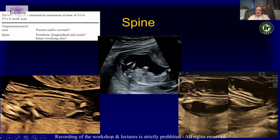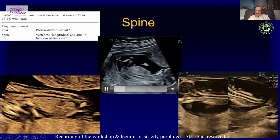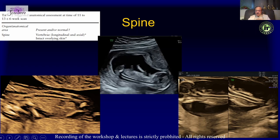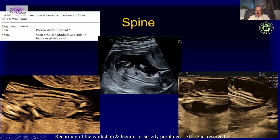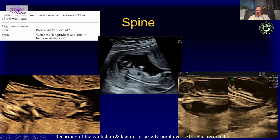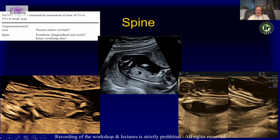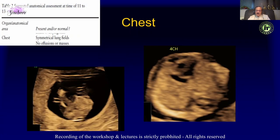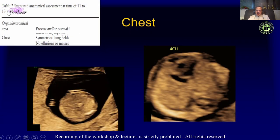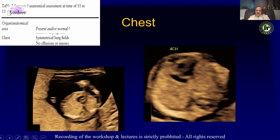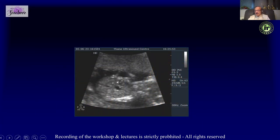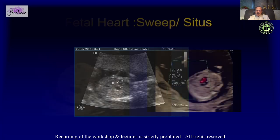Then look at the spine itself in all three planes — sagittal, coronal, and transverse — and make sure the overlying skin is intact. Besides looking for indirect signs, it is also very important to look at the spine directly. When looking at the chest, make sure we have symmetrical lung fields, no effusion or mass. Diaphragmatic hernias can also be picked up in the first trimester when you see something odd in the chest.